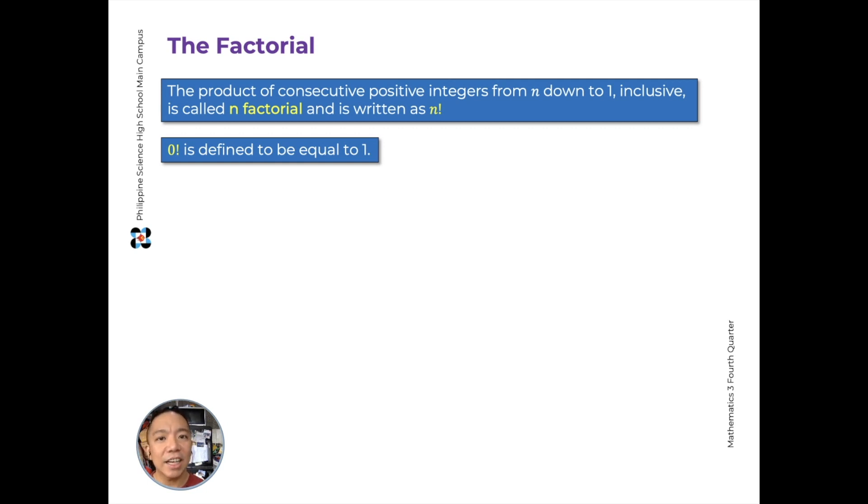We need it so our mathematical operations make sense later. So when we have 5 exclamation mark, we read this as 5 factorial. And by definition, this equals 5 times 4 times 3 times 2 times 1, which equals 120.